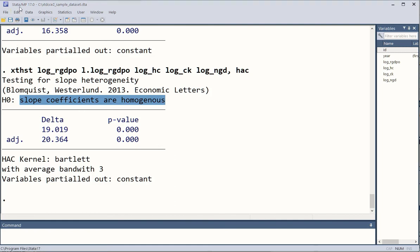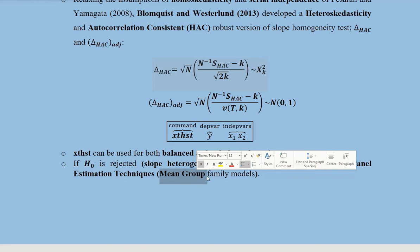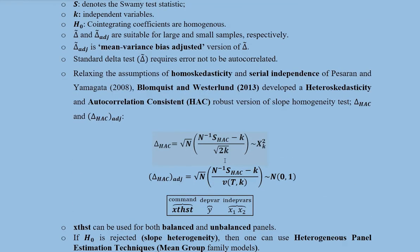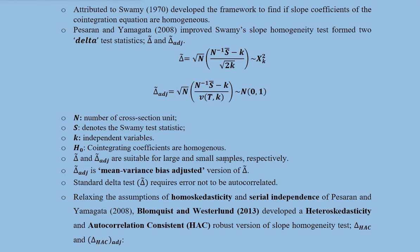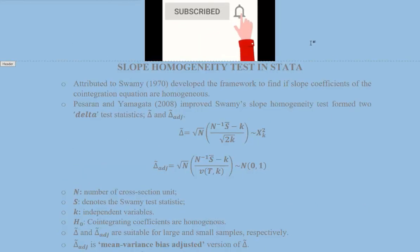So now we are going to accept this situation that is the situation of slope heterogeneity. Now we can apply heterogeneous panel estimation techniques which is usually there in the form of mean group family, pooled mean group or CS-ARDL. That we have done in our one of the videos on cross-sectionally augmented ARDL. You can watch that as well. You can subscribe if you haven't and get more knowledge regarding these techniques and how we can do it in Stata and other software. Thank you.